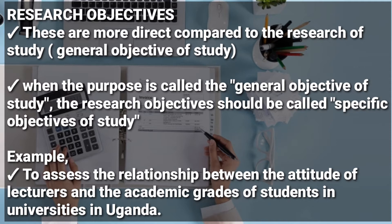An example of a research objective is: 'To assess the relationship between the attitude of lecturers and the academic grades of students in universities in Uganda.' This relates to our general objective, which was to assess the possibility of enhancing academic performance through increasing the commitment level of staff members of universities in Uganda. The general objective was broad; the research objective is specific.